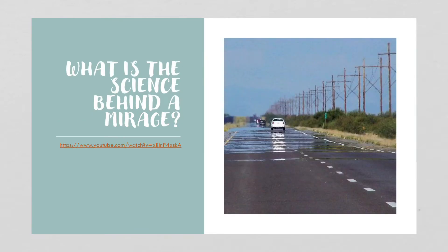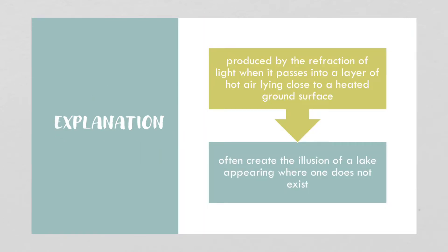You've probably heard about mirages in the desert — people looking for water and seeing water far away. You've probably also observed mirages without realizing it. On a hot summer's day, if you're driving along pavement, you might see what appears to be wet ground. That's actually a mirage. Mirages are produced by the refraction of light — the bending of light when it passes into a layer of hotter air lying close to a heated ground surface. Cool air and hot air, even though they're both air, are still considered two different mediums, and that can create the illusion of a lake or wet pavement appearing where there isn't one.